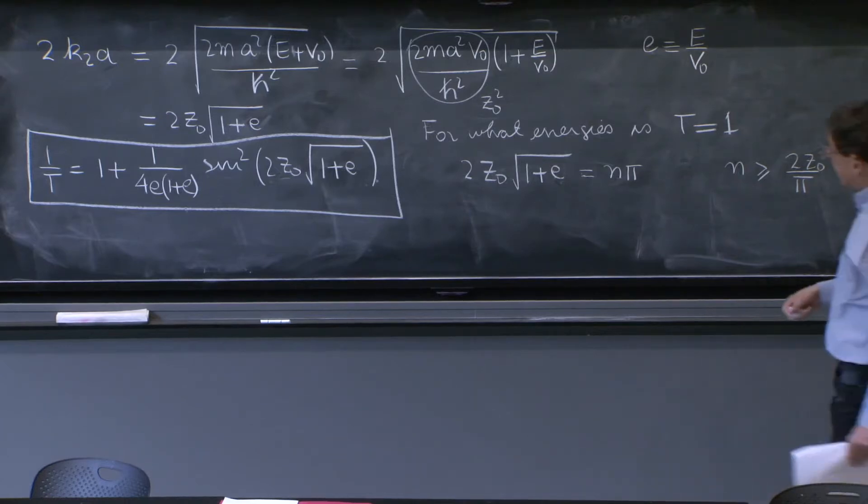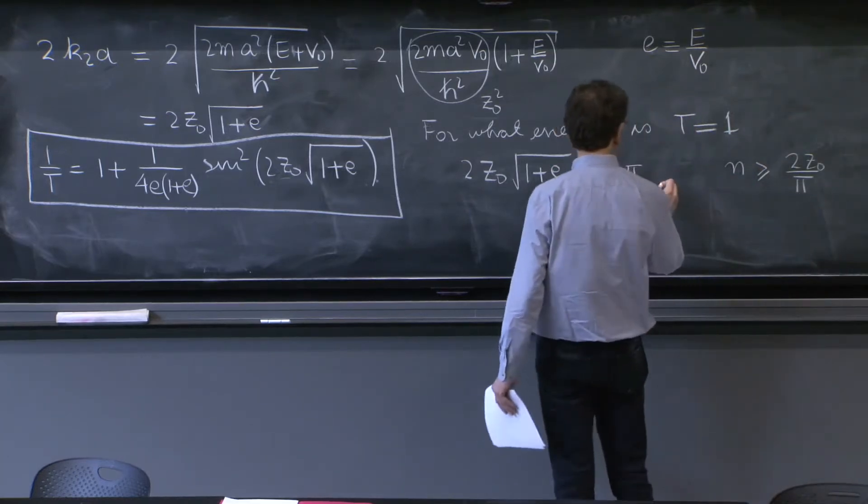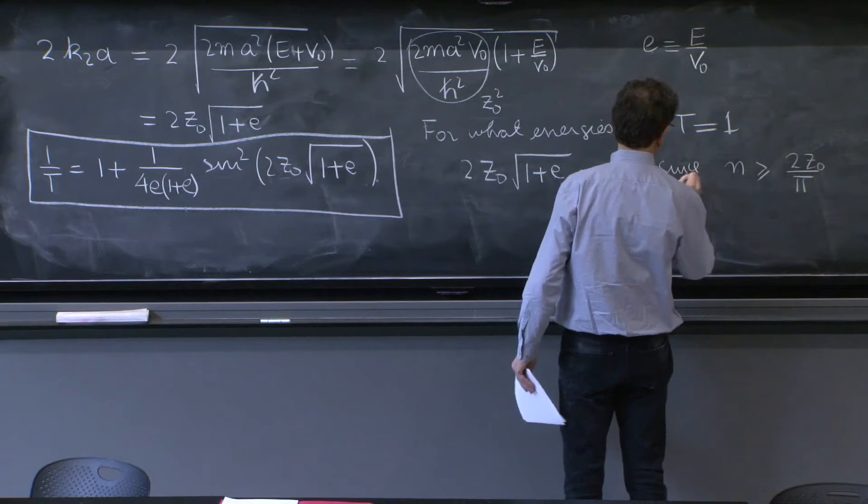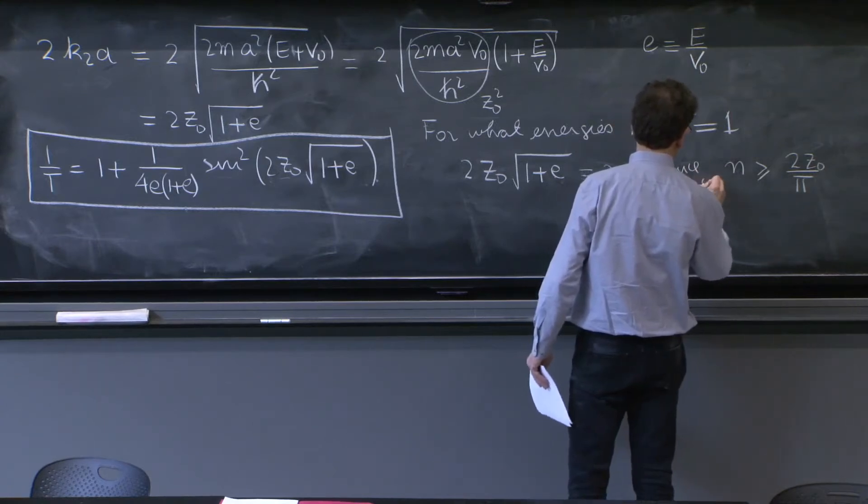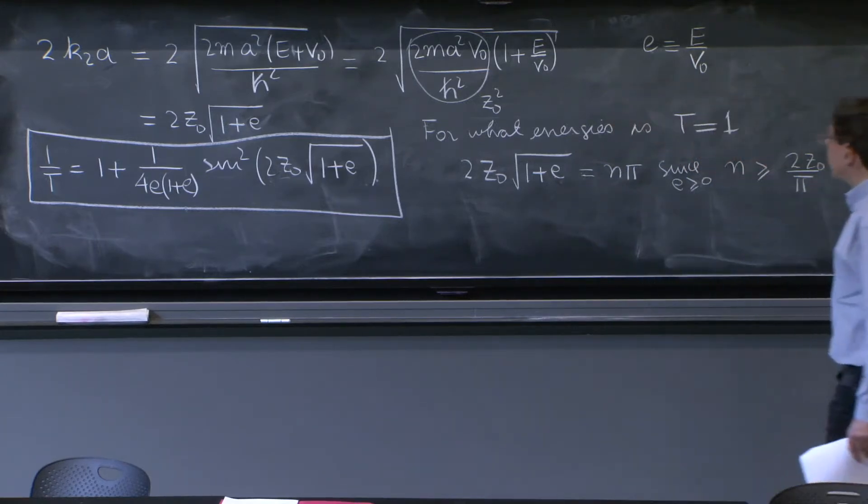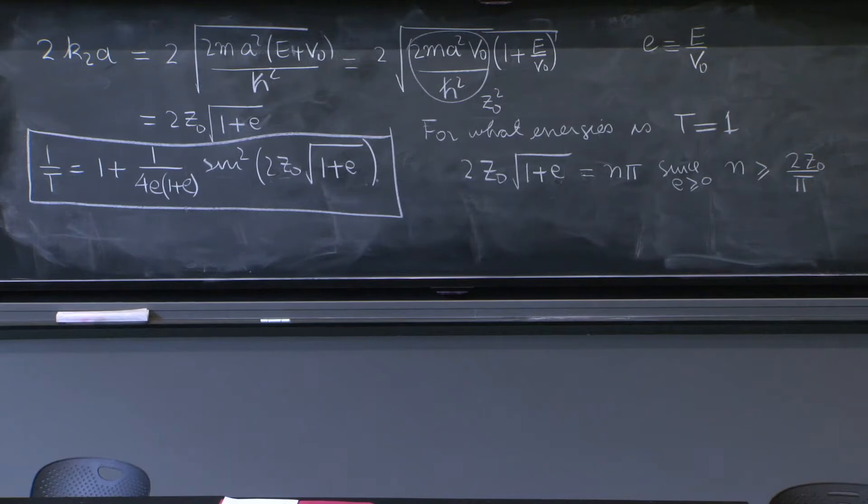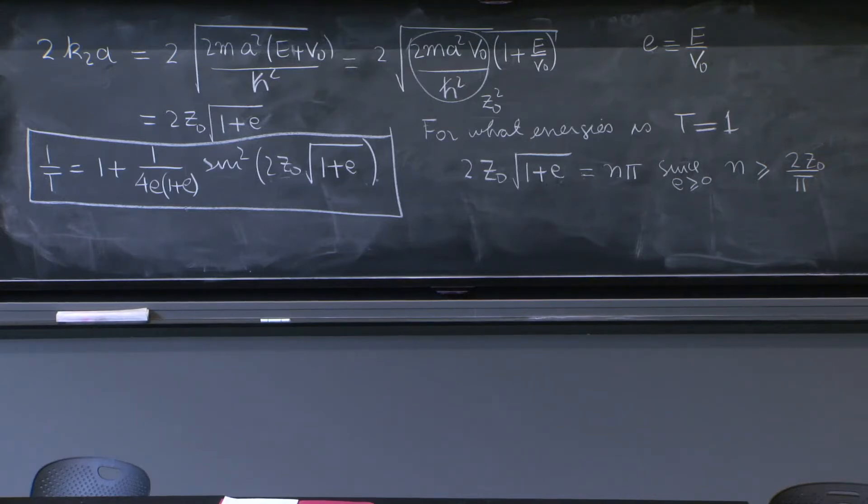This is because e, since e is greater than 0. So the left-hand side is a number that is greater than 2z0, and the right-hand side must, therefore, be that way.